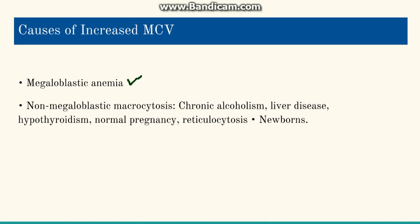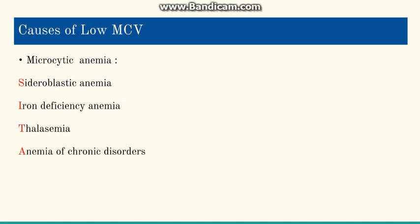Going to decreased MCV — the causes of microcytosis include sideroblastic anemia, iron deficiency anemia (a very important cause), thalassemia (another very important cause), and anemia of chronic disorders. To remember the causes of low MCV, we can use the mnemonic SITA, taking the first letter of each disease name.